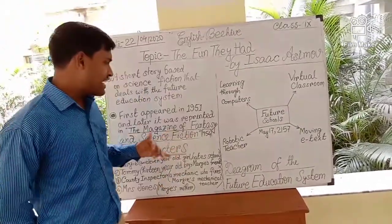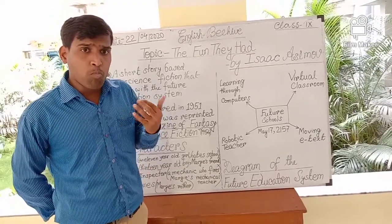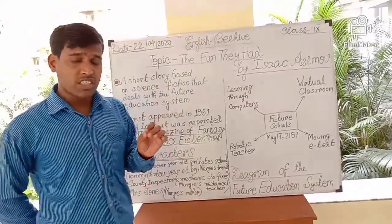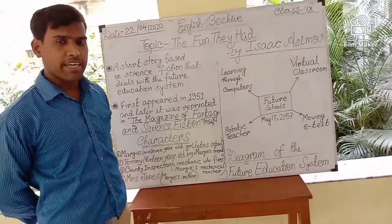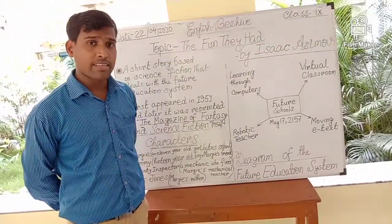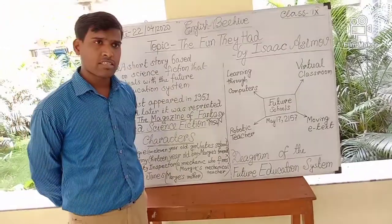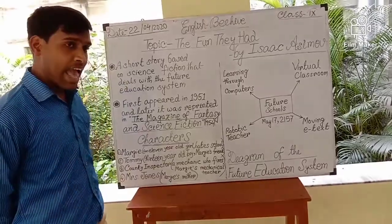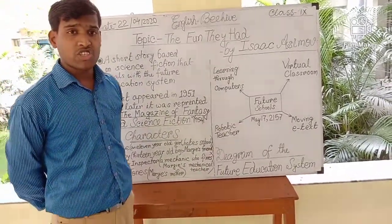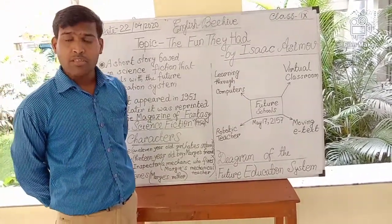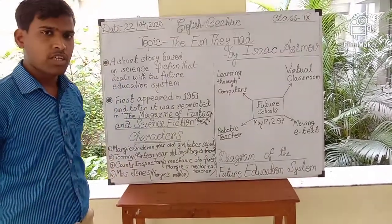They started reading the book, and gradually Margie developed an interest in it. They wanted to know more about the past education system. Tommy shared that in those times, people learned from human teachers who were very intelligent. Margie asked whether human teachers could be as intelligent as robotic teachers. Tommy said yes — his own father is as intelligent as the robotic teacher, so human teachers of the past had the same level of knowledge.